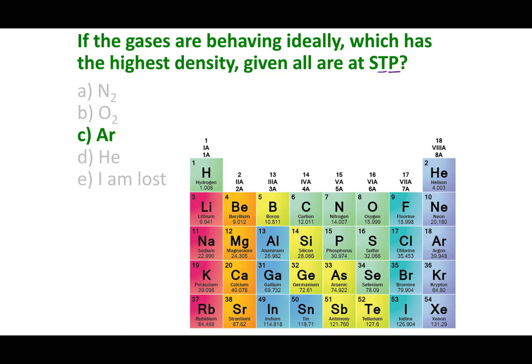So to answer this question, all you have to do was figure out which gas had the highest molar mass, or which gas had the higher weight. And argon is the heaviest gas here. It is about 40 grams per mole. So argon is going to be the densest gas.